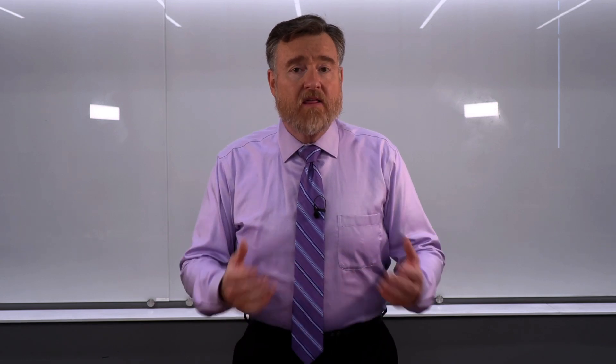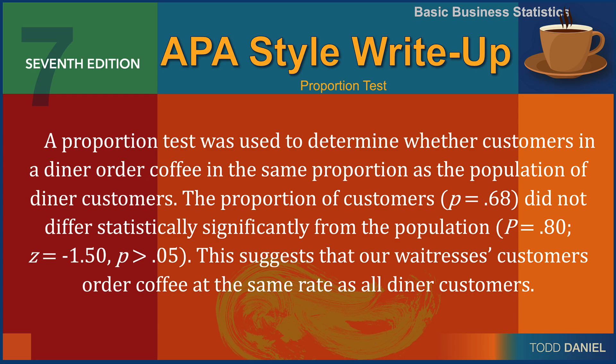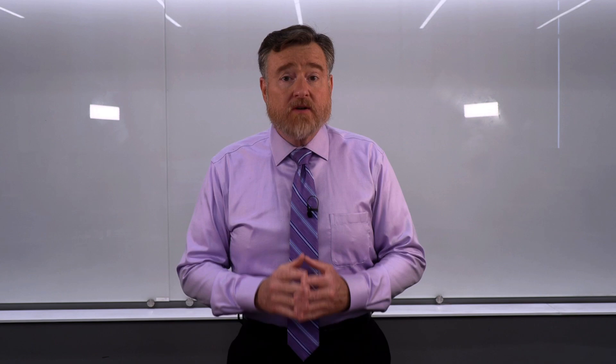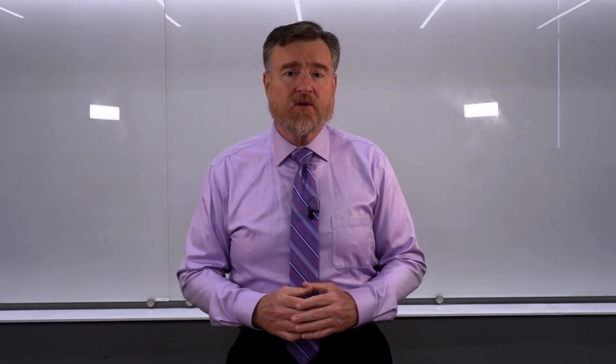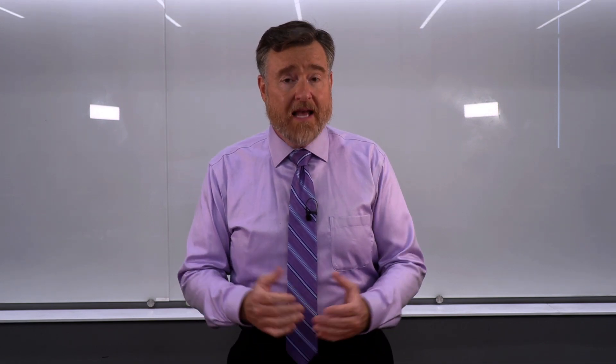Here is how I would write up these results in proper APA style. A proportion test was used to determine whether customers in a diner order coffee in the same proportion as the population of diner customers. The proportion of customers, 0.68, did not differ statistically significantly from the population, which has a proportion of 0.80. The z-test was negative 1.5, probability greater than 0.05. This suggests that our waitress's customers order coffee at the same rate as all diner customers. And now you know three ways to compare either means or proportions of a sample compared to its population — the first three of many hypothesis tests we're going to learn in our Basic and Applied Business Statistics course.